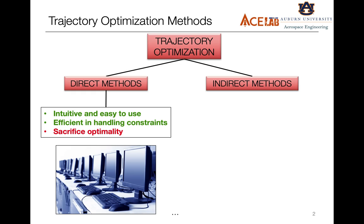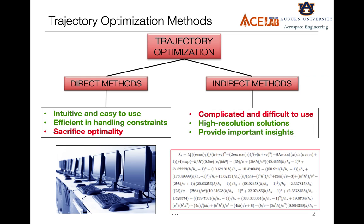But all this ease of implementation comes at a cost. These direct methods do not employ the first-order necessary conditions of optimality; therefore, they do not guarantee that the solutions obtained would be optimal. This is where the indirect methods come into picture. These methods are more complicated and difficult to use because they employ the first-order necessary conditions of optimality, which require certain extra equations. But all this hard work leads to high-resolution solutions, and the control law obtained is of a closed form, which provides much more insight into the solution.